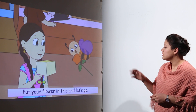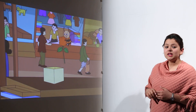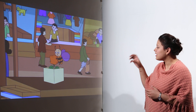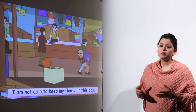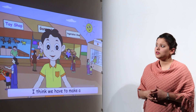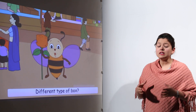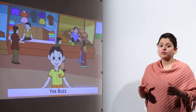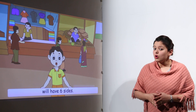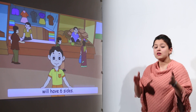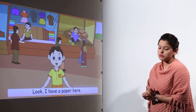The box was ready for the flour, so he placed the flour into that box. But he was still not able to place the flour into the box — that was because it needed a different type of box. It is not necessary that all boxes have six faces; boxes can be different also.